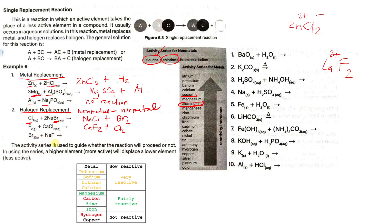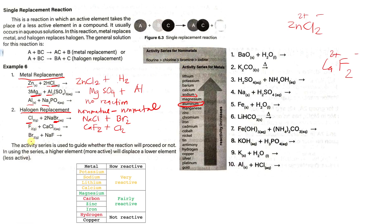Next, we have Br2 plus NaF. We have bromine and fluorine. Looking at the activity series, Br is less active compared to fluorine. So no reaction will occur because Br is less reactive compared to the fluorine in this compound.